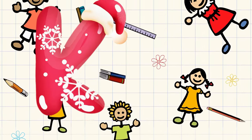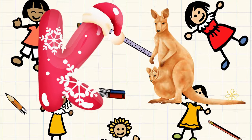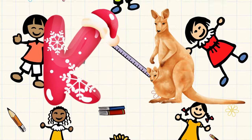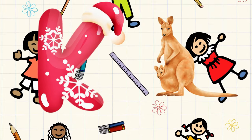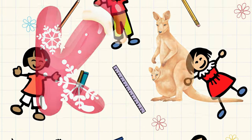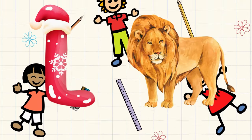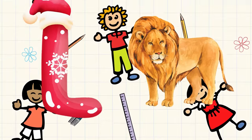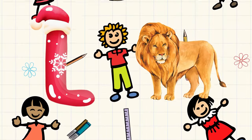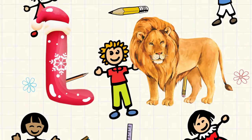K is for kangaroo, k-k-kangaroo. L is for lion, l-l-lion.